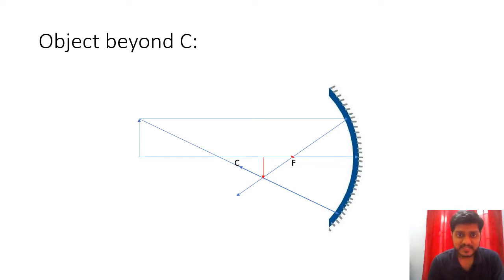It will pass through our focus. And the second line which we have discussed in our special cases. So it will pass through center of curvature and it will reiterate that path back.